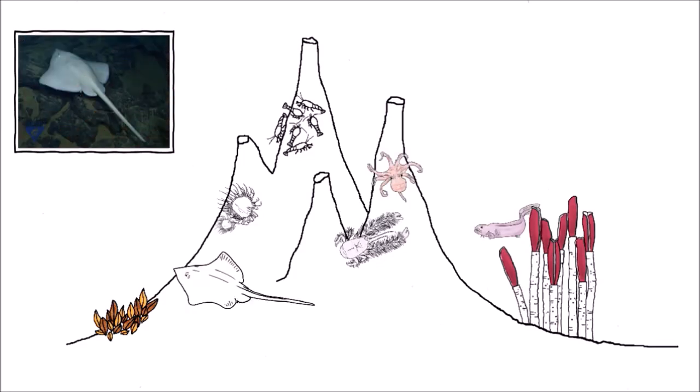Skates, they're closely related to the rays, lay their eggs on warm rocks around the vents for incubation. Well, but how can life exist so far away from the sunlight?